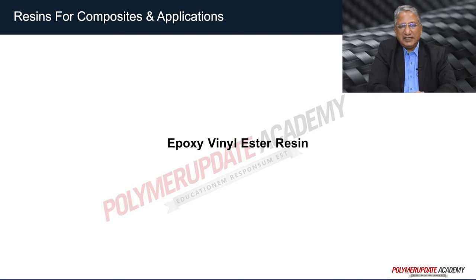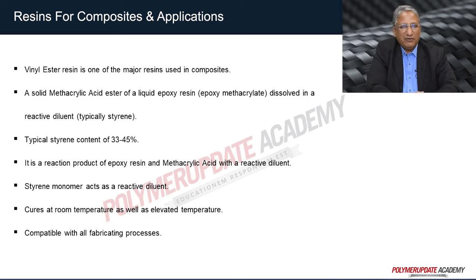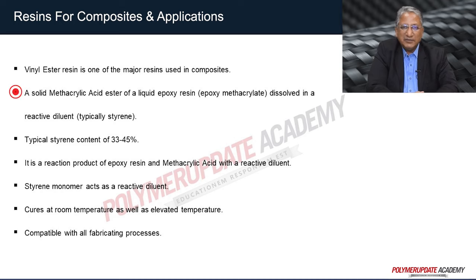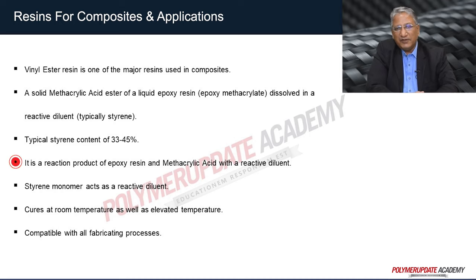Next, we will study epoxy vinyl ester resin: its structure-property relationship and industrial applications. Vinyl ester resin is one of the major resins used in composites. A solid methacrylic acid ester of liquid epoxy resin (epoxy methacrylate) is dissolved in a reactive diluent, typically styrene. Typical styrene content can be 33% to 45%. It is a reaction product of epoxy resin and methacrylic acid with a reactive diluent.